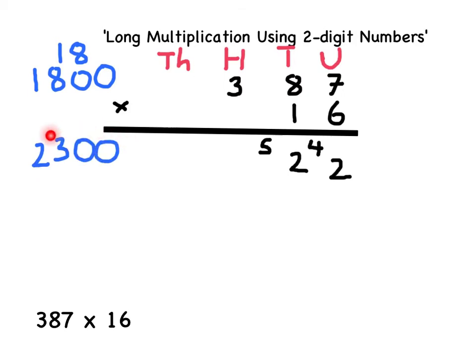To show 2,300 in my long multiplication, I can simply write a 3 in the hundreds column to represent that there are three hundreds, and a 2 in the thousands column to represent that there are two thousands.